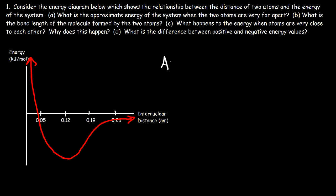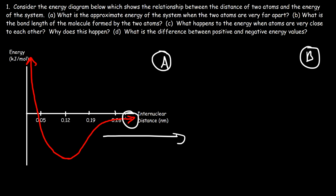If atom A and atom B are infinitely far apart, what happens to the energy? As the distance increases — the values on the x-axis increase — notice that the curve approaches the x-axis, and at the x-axis the energy is zero. So the answer to part A: when the atoms are very far apart, the energy of the whole system is going to be zero.